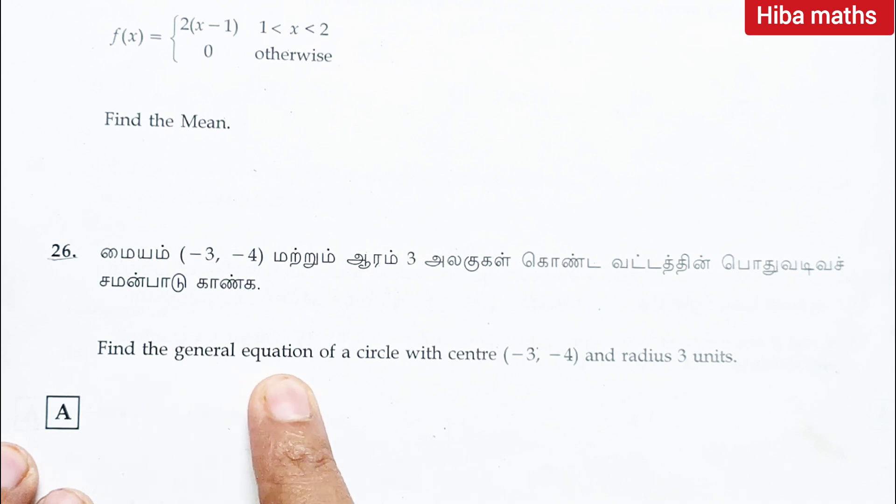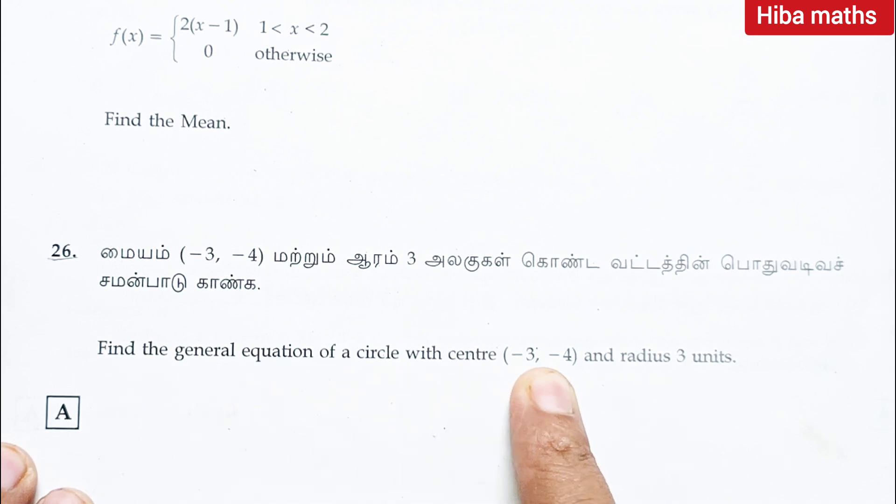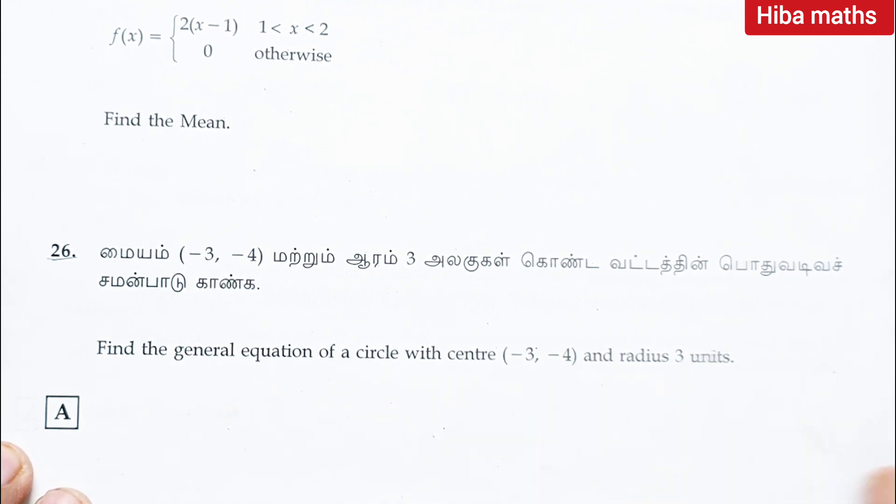Question 26: find the general equation of circle with center minus 3 comma minus 4 and radius 3 units.